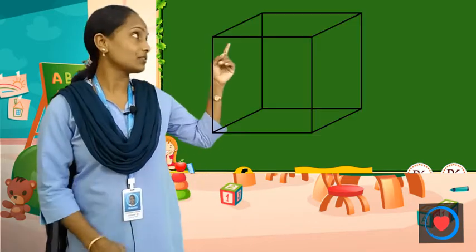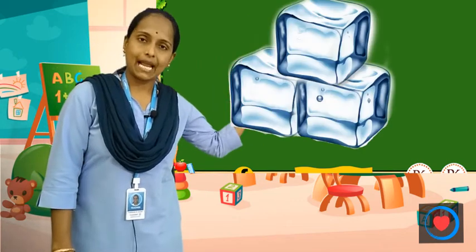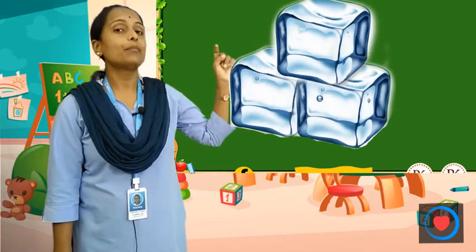ये क्या है? Shape है. अब हम solid shape के बारे में जानेंगे. Solid shape means fully हुए रहते हैं. जैसे की, देखो — first one है cube. ये है cube. Cube के एक्जाम्पल है — ice cube, then dice. Okay?